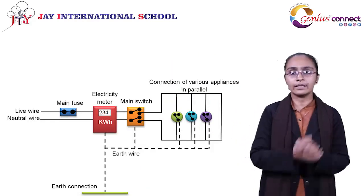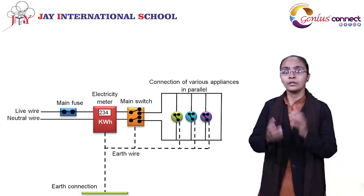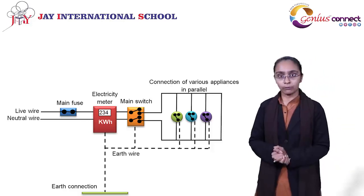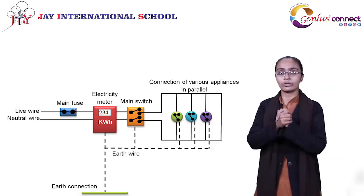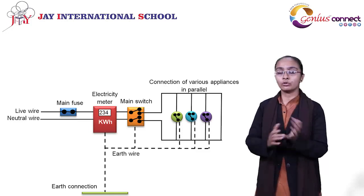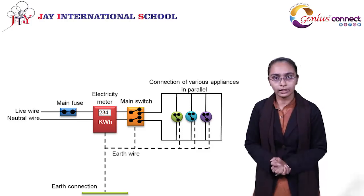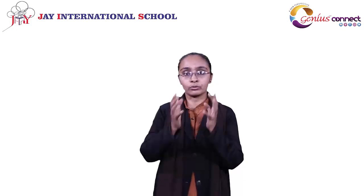In India, we are using 230 volt — means the potential difference which we are getting is between 220 to 230 volt — and the frequency of it is 50 hertz. So this was the discussion in terms of current electricity.